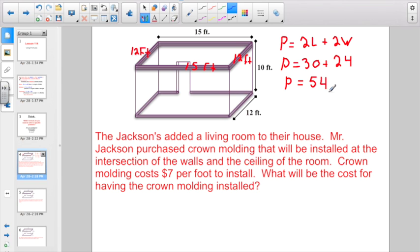But P equals 54, perimeter equals 54, isn't the answer, because they want to know what will be the cost for having the crown molding installed if it costs $7 per foot. So I have 54 feet of crown molding that's going to need to go up. 54 feet for perimeter times $7 per foot to install, and I end up with a grand total installation cost of $378.